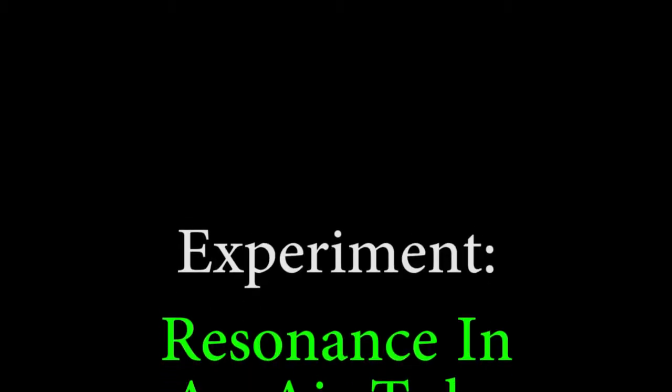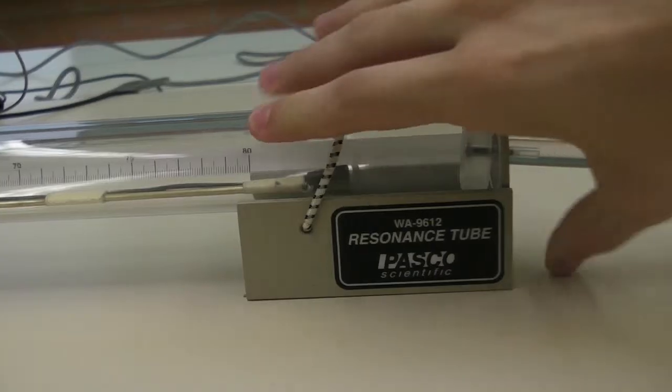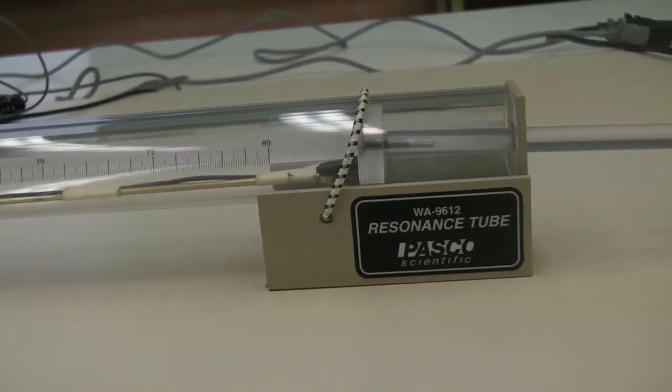In exercise 3, we'll be finding the two blanks that create resonance at a given frequency. Pick a frequency and slowly move the piston along the tube. Record the resonance positions.